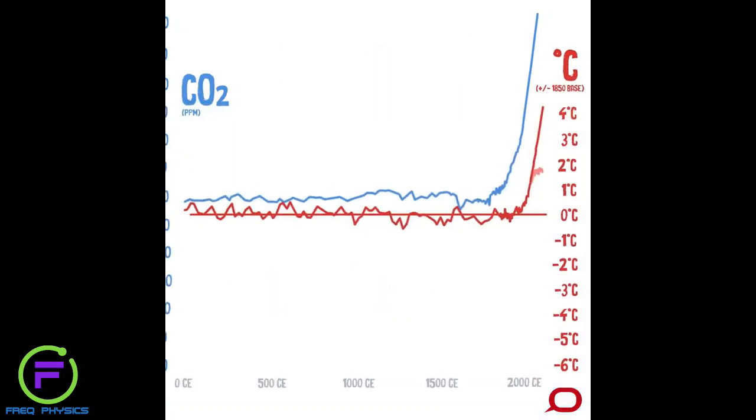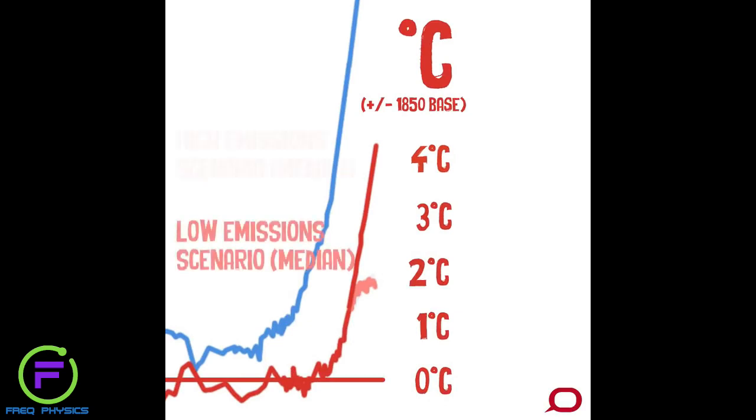On current projections, by 2100, our climate could warm by 4 degrees Celsius or even more, depending on our actions to cut CO2 levels.